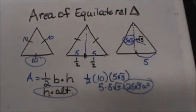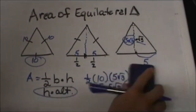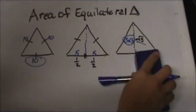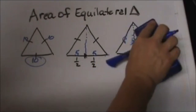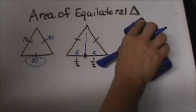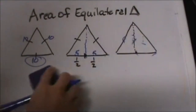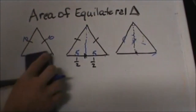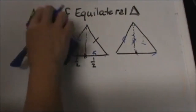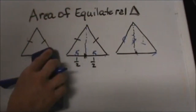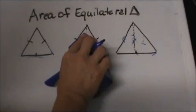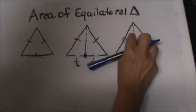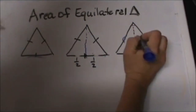Now let's look at one a little bit differently — same patterns — but this time you're given the altitude and have to work backwards to figure out the side. I'm going to erase all this, and this time I'm going to give you the altitude, which is going to be 6.